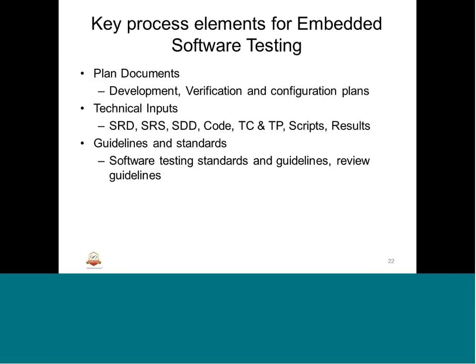The next element is guidelines and standards — these are inputs needed for embedded software testing. They include software testing standards and guidelines. For example, in automotive you have ISO standards; in aerospace they follow DO-178 or similar. Each domain has its own inline process and standard for software testing to be followed. Review guidelines are also used, helping in how a product's different cases of software testing will be handled.